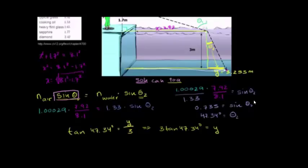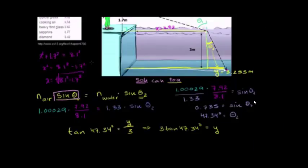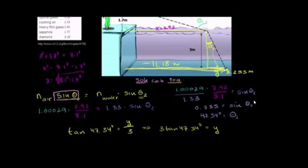Our question was what is the total distance. It's x plus y: 7.92 plus 3.255, which gives us about 11.18 meters. So the point on the bottom of the pool where the laser pointer hits will be approximately 11.18 meters from the edge of the pool.